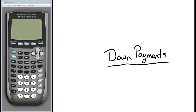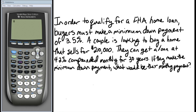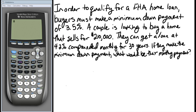Let's look at an example. In order to qualify for an FHA home loan, buyers must make a minimum down payment of 3.5 percent. A couple is looking to buy a home that sells for two hundred and ten thousand dollars. They can get a loan at four point two percent compounded monthly for 30 years. If they make the minimum down payment, what would be their monthly payment?